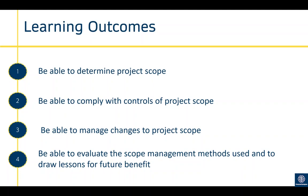Outcome three is being able to manage changes to project scope. This outcome is about updating and managing changes in accordance with your change management procedure. This unit has strong links to other units, and typically this unit would be covered by evidence which focuses on changes.